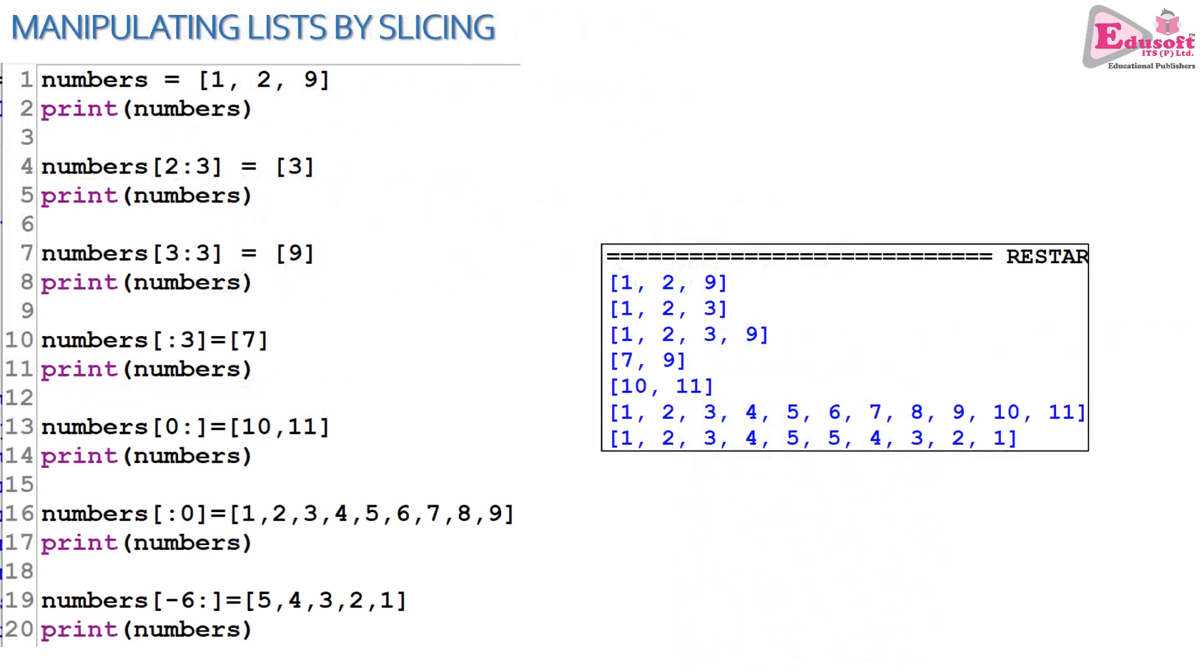If you have understood slicing of lists, then you can easily figure out what is happening in this program. We are making changes in the values of the list by the help of slicing. Here we have a very simple list named numbers. It has three values: 1, 2 and 9. In line number 4, we are storing a single element with value 3. At what position are we trying to store it? Index 2, position 3. So here at index 2, position 3, the value 9 is there, which will be overwritten by the new value 3. See the output.